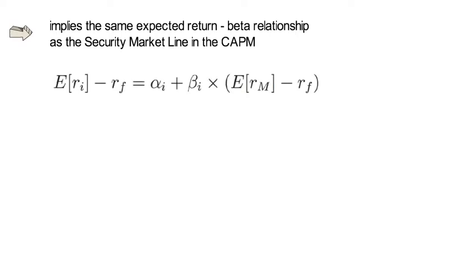According to the CAPM, the non-market risk premium alpha i needs to be zero. Yet in real life applications it can be different from zero and hence needs to be explicitly accounted for when estimating a single index model with data.